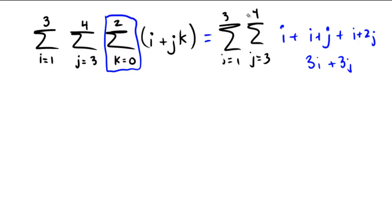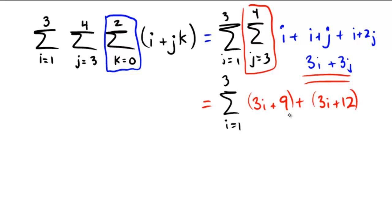Next stage, let's do this one. So, still have i equals 1 to 3. And now in red, as I evaluate this one for j equaling 3 to 4, when I substitute j equals 3, 3i plus 9. Substitute j for 4, 3i plus 12. So it looks like here we're going to get a total of 6i plus 21.